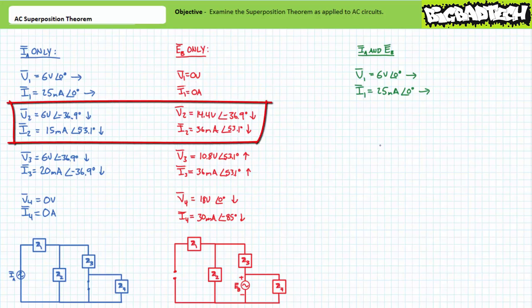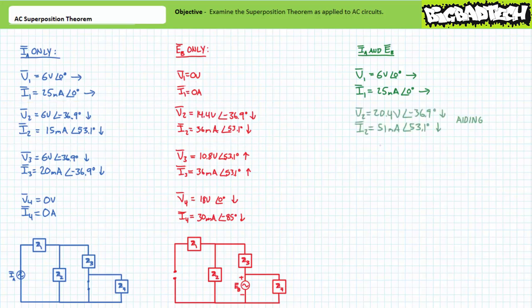With respect to Z2, it appears current source IA and voltage source EB are aiding one another — current direction and polarity are the same. Assuming top to bottom is positive and simply adding the effects, Z2 ultimately experiences 51 milliamps of current at an angle of 53.1 degrees traveling top to bottom. The voltage drop across Z2 is 20.4 volts at an angle of negative 36.9 degrees, positive to negative top to bottom.